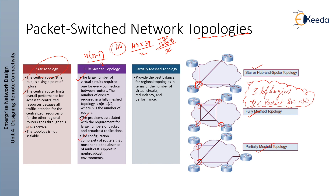Partially mesh topology reduces the number of routers that have direct connections to all other nodes. Not all nodes are connected to all other nodes — for a non-mesh node to communicate with another non-mesh node, it must send traffic through one of the fully connected routers. In general, the partially mesh approach provides the best balance for regional topologies in terms of number of virtual circuits, redundancy, and performance. If a particular router handles more traffic, it can be given a fully mesh connection; otherwise, a partial or star approach suffices.